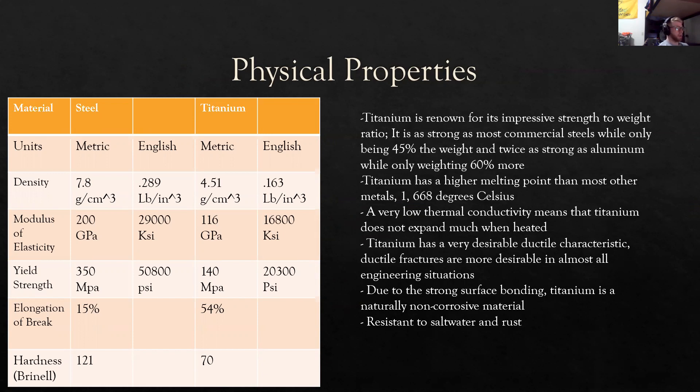Titanium has an incredibly high melting point, higher than most other metals, with it sitting around 1,668 degrees Celsius. One of the byproducts of this high melting point is that titanium has a very low thermal conductivity, meaning that titanium does not expand much when heated.